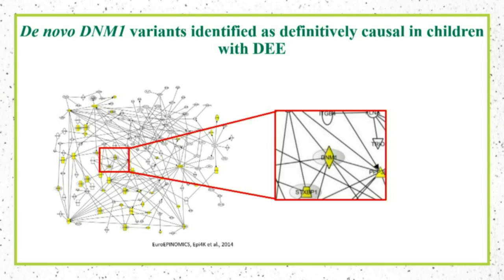Right next to Dynamin-1 in that network is STXBP1, which is another gene that's very important for presynaptic function and is also causal for DEE and LGS as well.